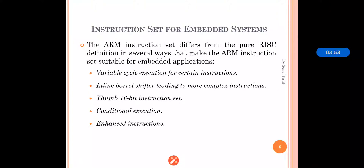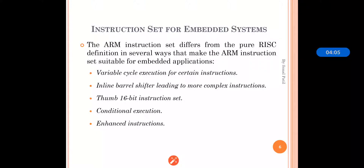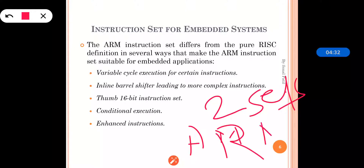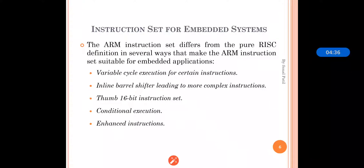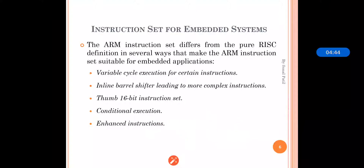The ARM instruction set is divided into two main parts: the ARM state instruction set and the Thumb state instruction set. The ARM state instruction set is 32-bit wide, while the Thumb state instruction set is 16-bit wide. These are the two instruction sets used in ARM architecture.